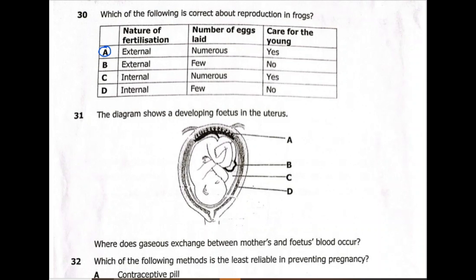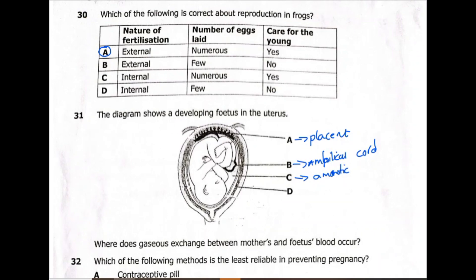Question 31: the diagram shows a developing fetus in the uterus. Structure A is the placenta. Structure B is the umbilical cord, which consists of the umbilical vein and umbilical artery. Structure C is the amniotic fluid, which prevents damage and acts as a cushion. Structure D is the amnion, which acts as a membrane. Where does gaseous exchange between the mother's and fetus's blood occur? It occurs at the placenta. The answer is A.